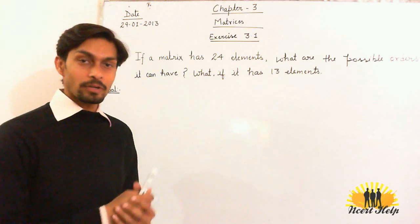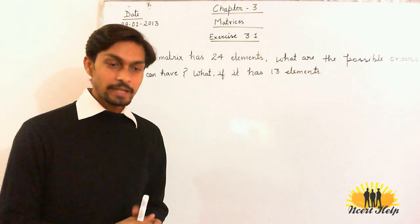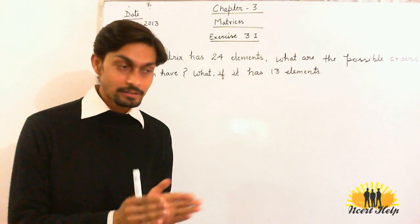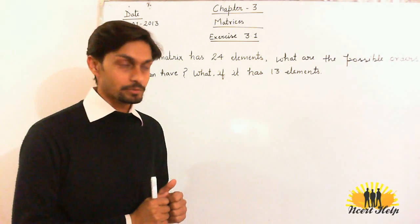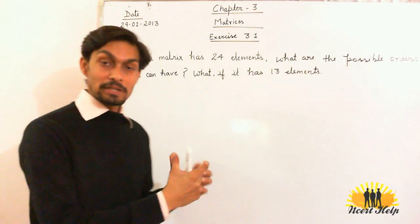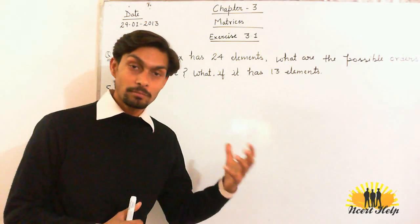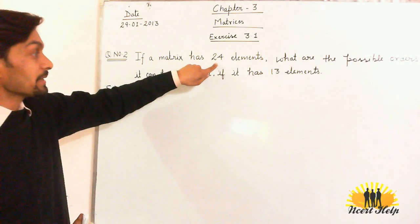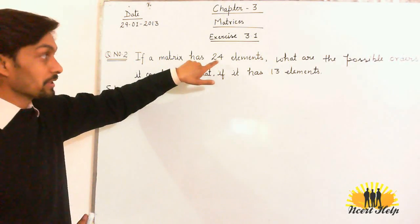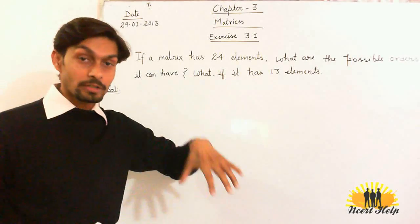In question number 1, I taught you that the order of a matrix is always written as number of rows into number of columns. By multiplying number of rows and number of columns, it gives you the number of elements in the matrix. Here, the number of elements is 24. We have to find out what are the possible orders.